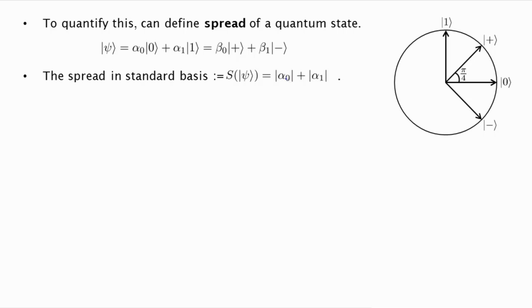And now we are going to define the spread in this standard basis, the 0, 1 basis, as the absolute value of alpha 0 plus the absolute value of alpha 1, and in the sign basis, it's absolute value of beta 0 plus absolute value of beta 1. So why did we define spread this way?